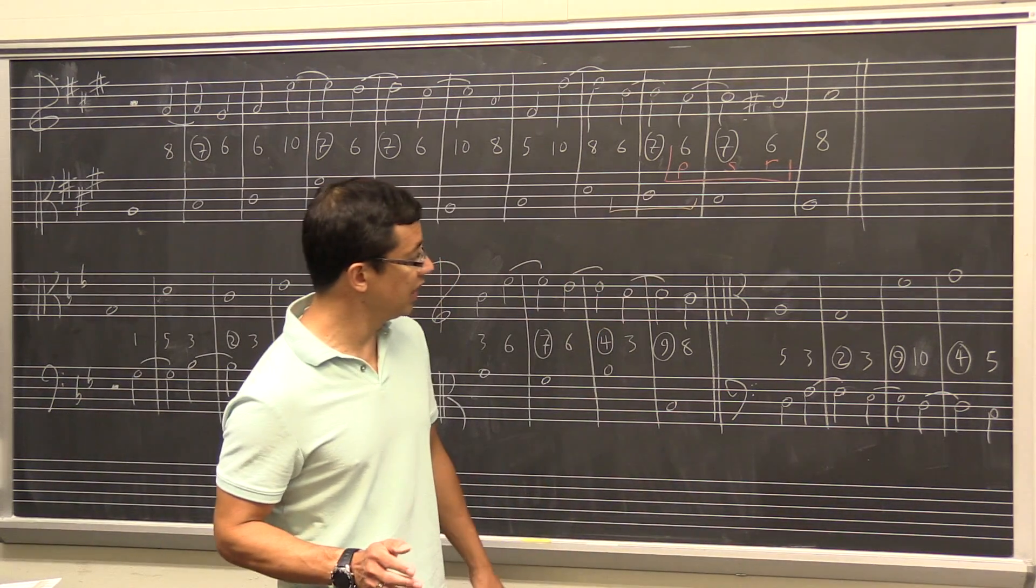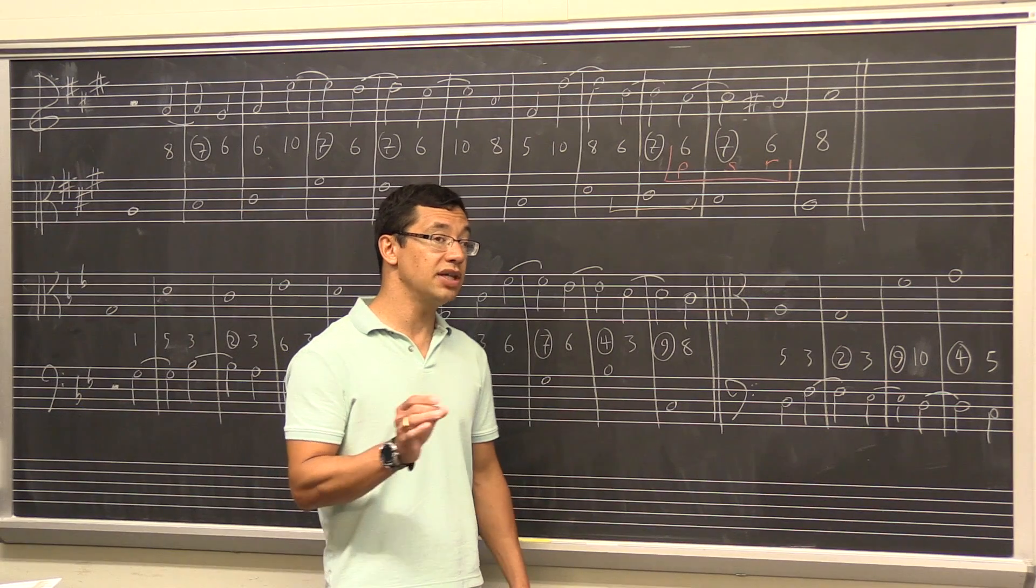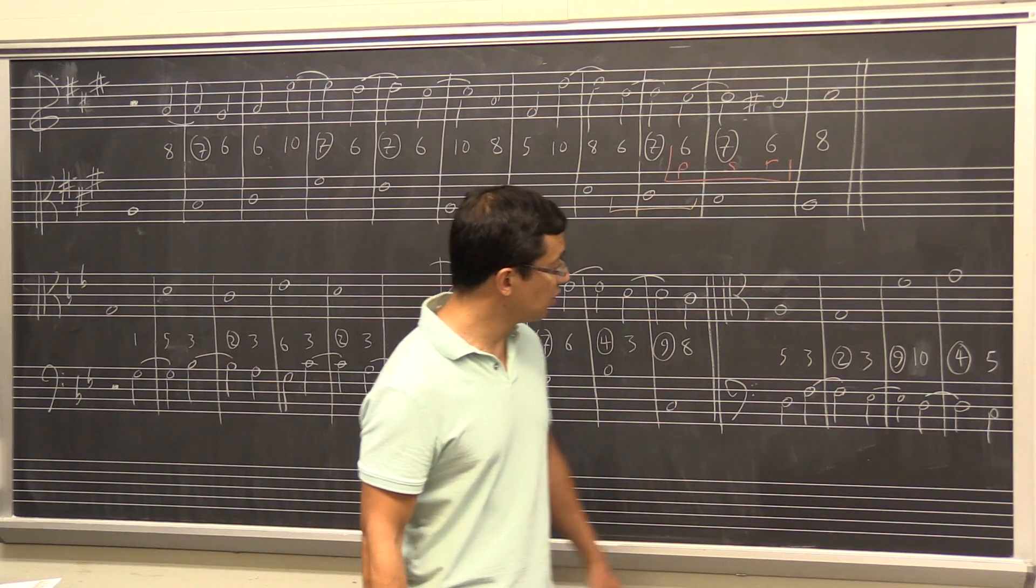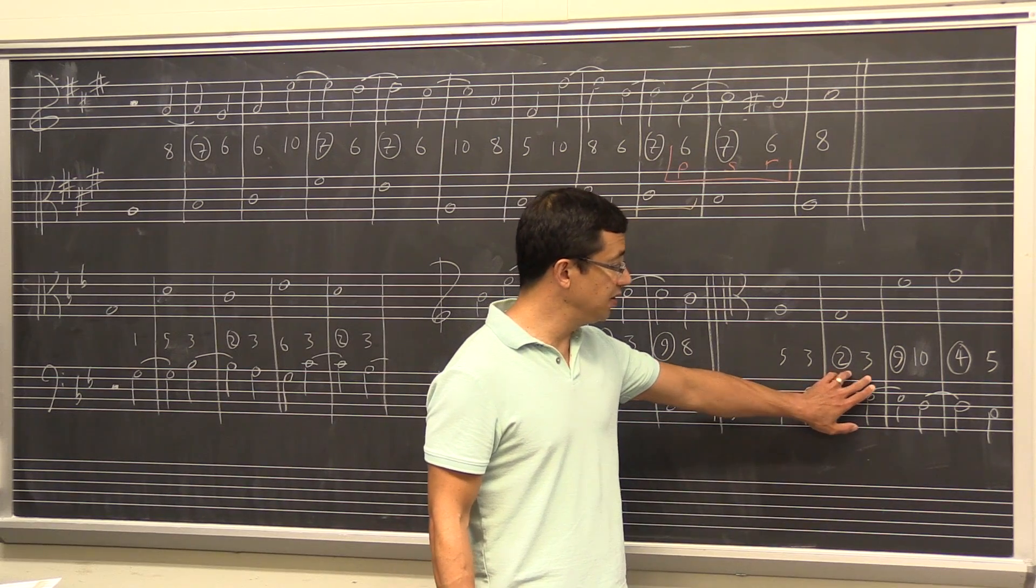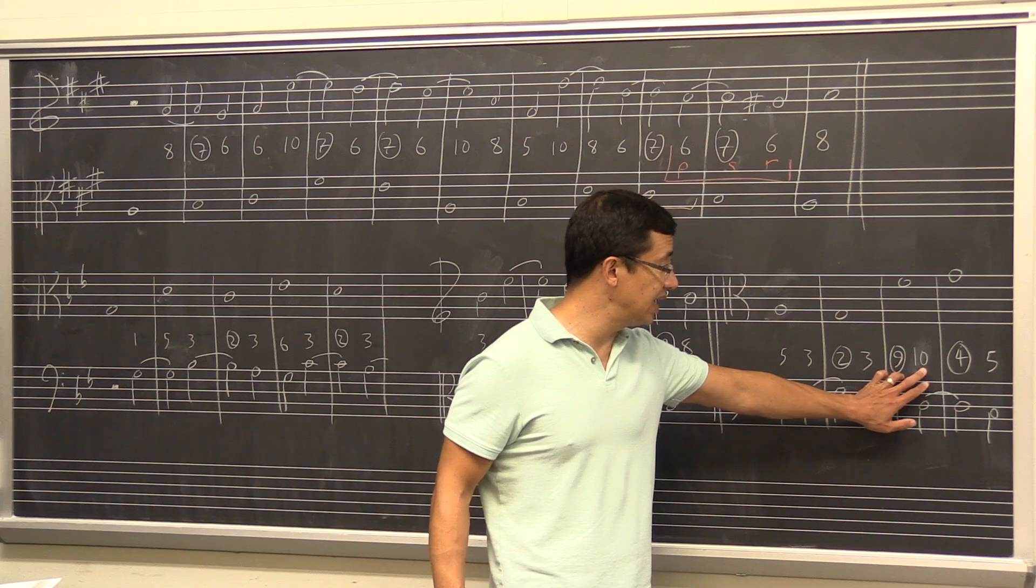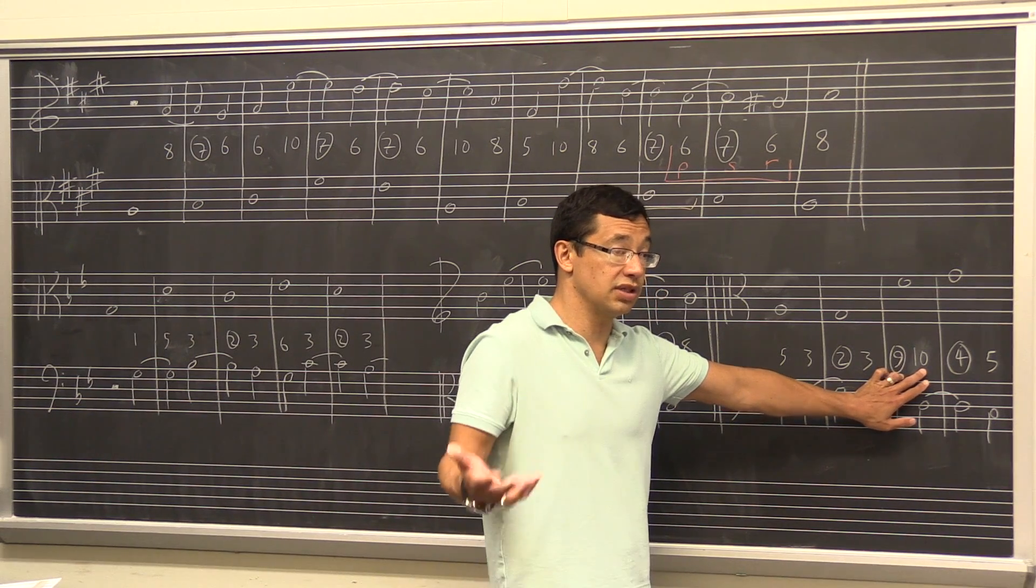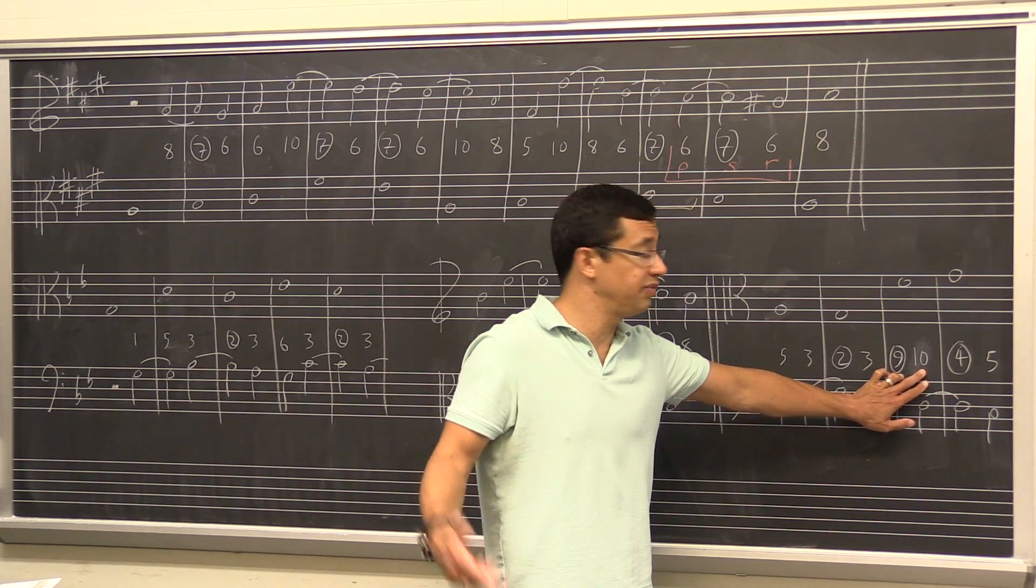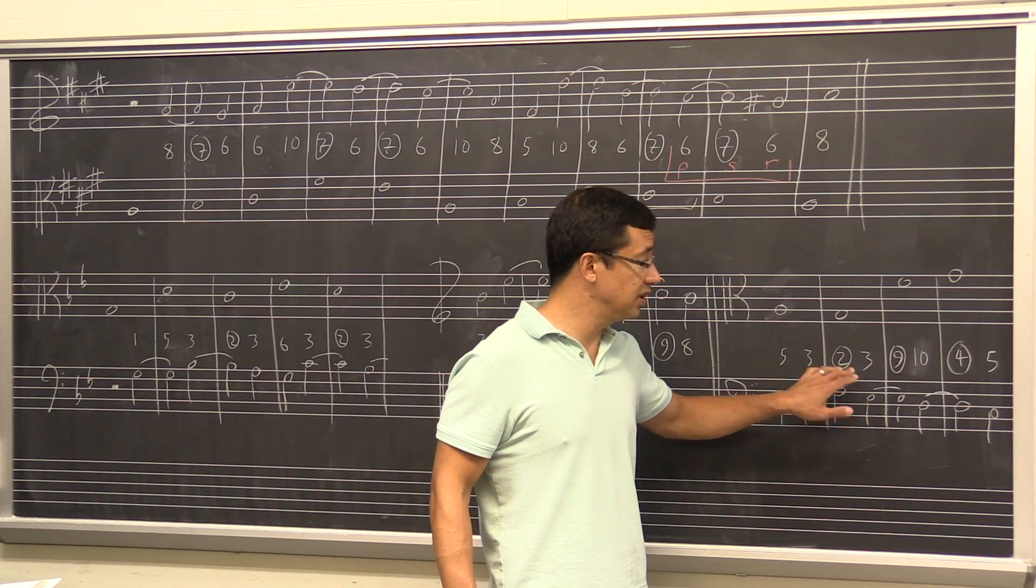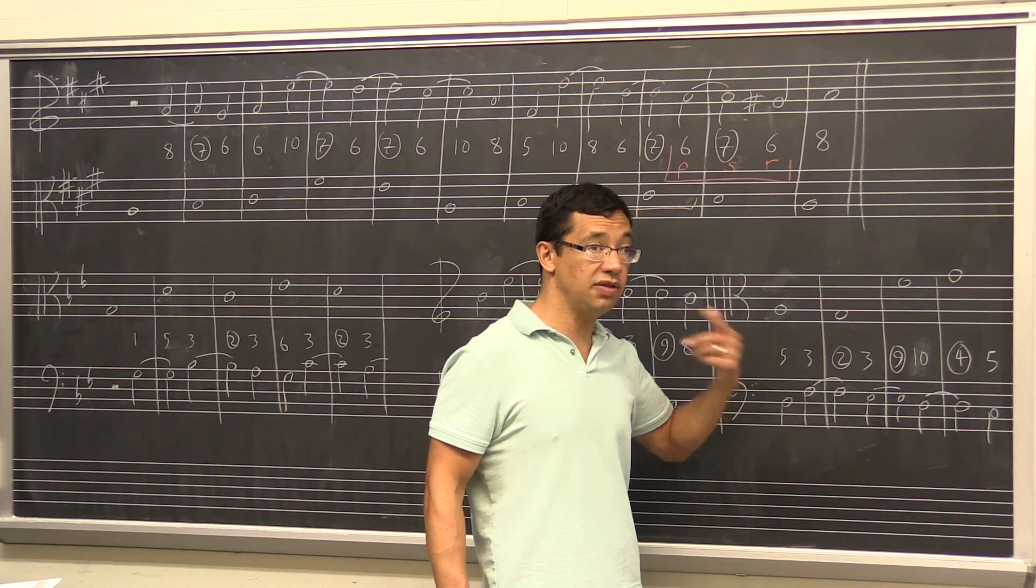Now suppose that we're writing lower counterpoint. We have a much more restricted vocabulary. Here, really what we're working with is the two-three suspension. It may be an octave larger and be instead a nine-ten suspension. Those, of course, are simply the same. It's just a two-three octave bigger. And this is our main one that we have to use. So again, memorize that: two-three, nine-ten.